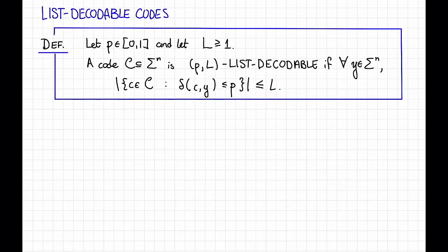In this context, we say that L is the list size, and P is the list decoding radius, or sometimes just radius.